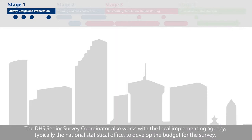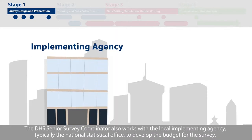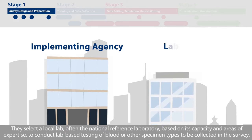The DHS Senior Survey Coordinator also works with the local implementing agency, typically the national statistical office, to develop the budget for the survey. They select a local lab, often the national reference laboratory, based on its capacity and areas of expertise, to conduct lab-based testing of blood or other specimen types to be collected in the survey.